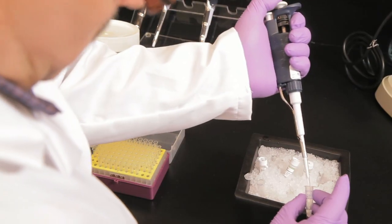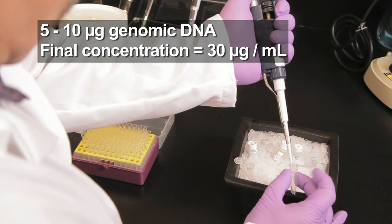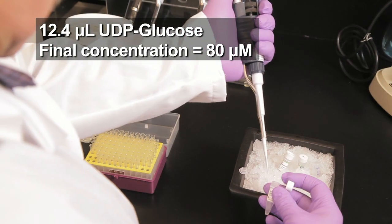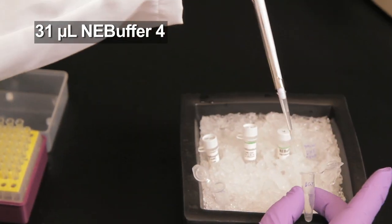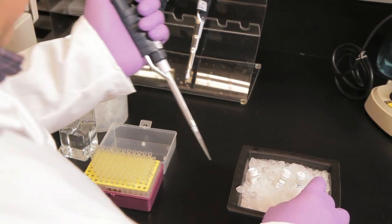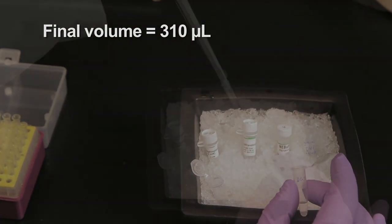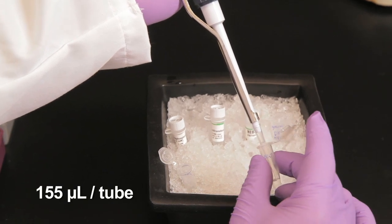In a 1.5-milliliter reaction tube, mix the genomic DNA, UDP glucose, NEB buffer 4, and enough nuclease-free water to bring the total volume to 310 microliters. Split this reaction mixture into two tubes of 155 microliters each.